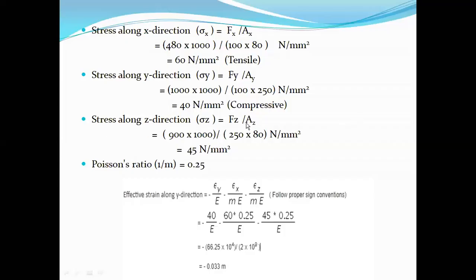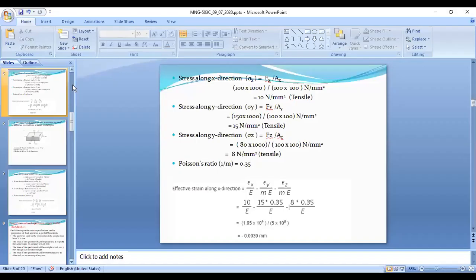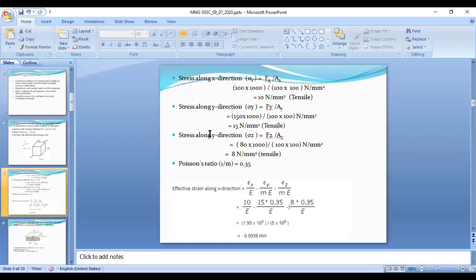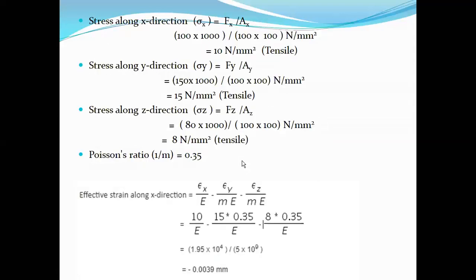Sigma_z = 80×10³ / (100×100) = 8 N/mm², and Poisson's ratio μ = 1/m = 0.35. The effective strain along x-direction equals σ_x/E minus μ·σ_y/E minus μ·σ_z/E, which gives: (10 − 0.35×15 − 0.35×8) × 10⁴ / (5×10⁹).